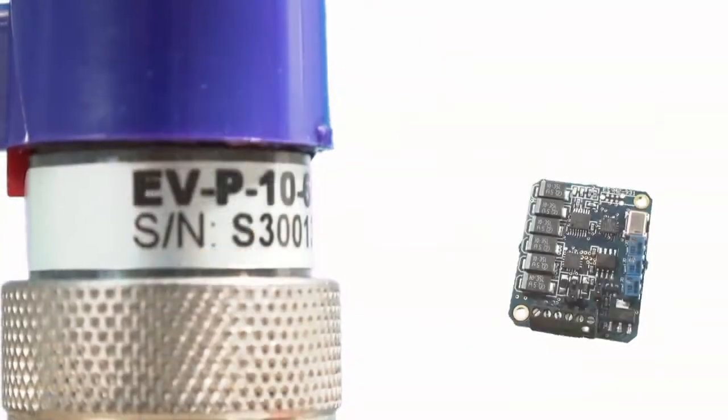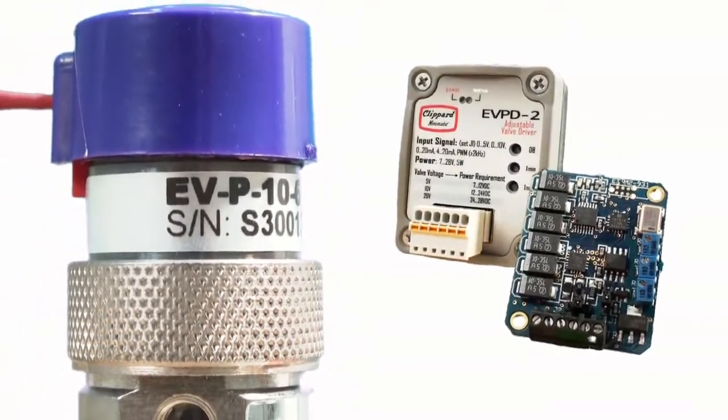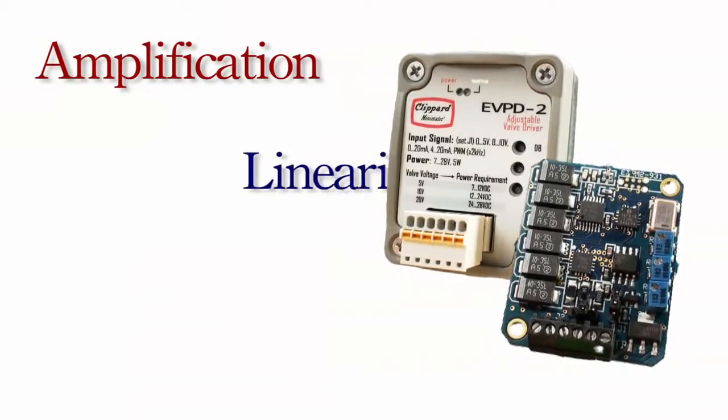The Clipper Proportional Driver, or EVPD, has two basic functions: amplification and linearization.